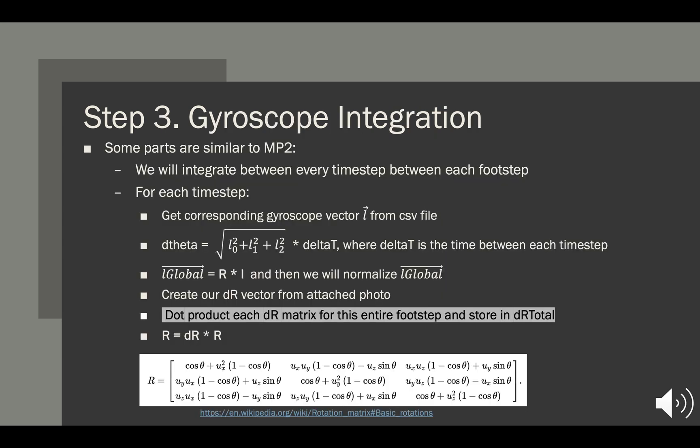The next step is to do gyroscope integration. A lot of this is really similar to MP2, so I won't go through all the details. However, one difference is that we're going to take the dot product of each dR matrix for this footstep, and we're going to store that in dR total.